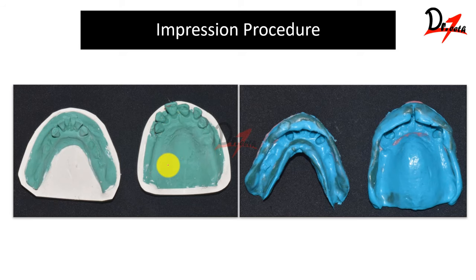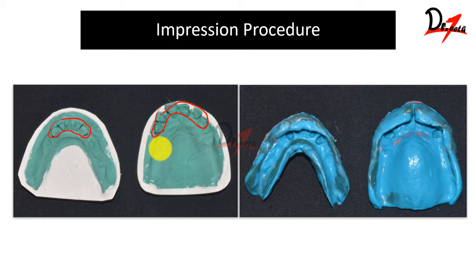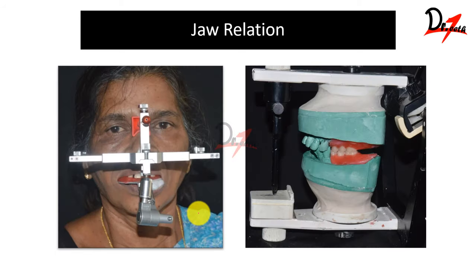Another method is to block out the teeth area with 4 mm modeling wax and the remaining area with 2 mm wax, then make a complete custom tray covering all the teeth, do border molding, and make the impression. So there are two ways to make the impression. We then proceed to jaw relation recording.